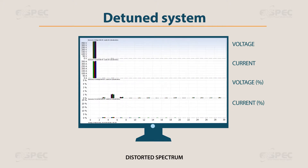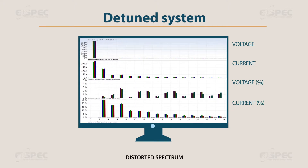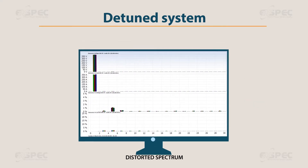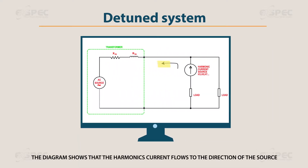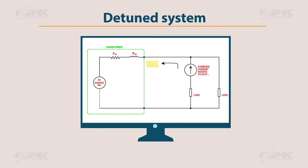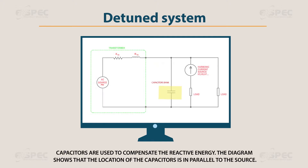Pure spectrum versus distorted spectrum. The diagram shows that the harmonic current flows in the direction of the source. Capacitors are used to compensate the reactive energy, and the diagrams show the location of the capacitors in parallel to the source.